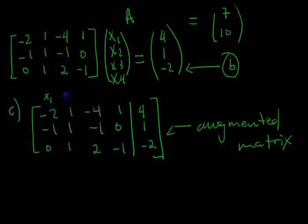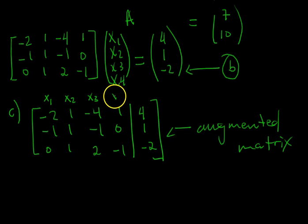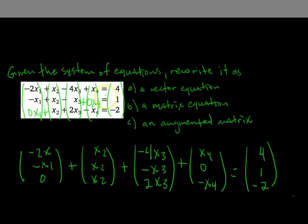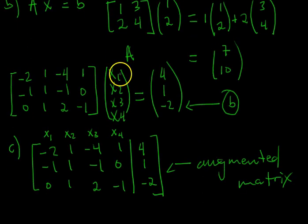And so to be clear, though, this first column is the x1 column. The second column is the x2 column. The third column is the x3 column. And the fourth column is the x4 column. You don't have to write this when you're writing your augmented matrix. But what it means is that this first column vector of A in your augmented matrix are the coefficients to the x1 unknown. So if we look, we have negative 2, negative 1, and 0. Those are the coefficients to the x1 unknown. Here, we have negative 2, negative 1, and 0. So all the information is still there. It's just much more concise.